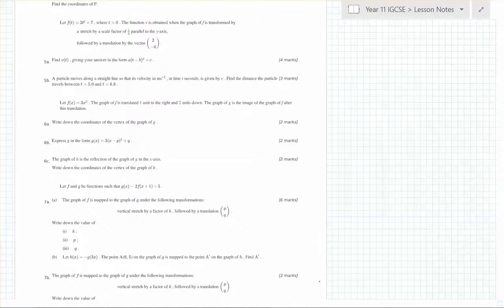Alright, let's have a look at this question then. We've got a function, f of t is 2t squared plus 7. Now, f of t, f of x, same thing, replace t and x, not a problem.